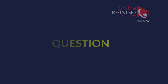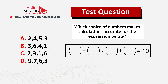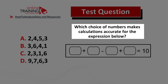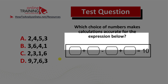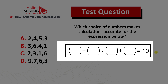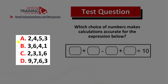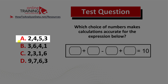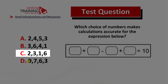Let's look at an intermediate level question we frequently see on the test. Which choice of numbers makes calculations accurate for the expression below? You're presented with an expression that leads to the count of 10. You add numbers one and two, subtract number three, then add number four to get the result 10. The four choices are: choice A: 2 4 5 3; choice B: 3 6 4 1; choice C: 2 3 1 6; and choice D: 9 7 6 3.